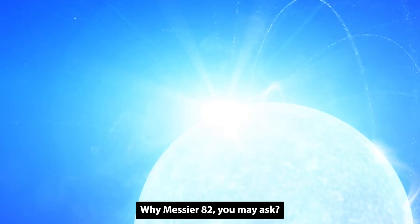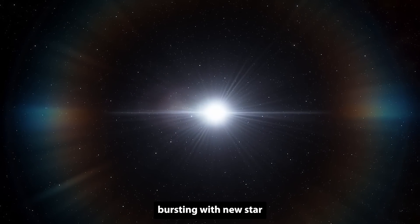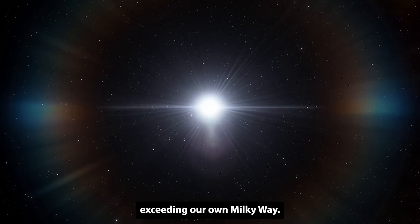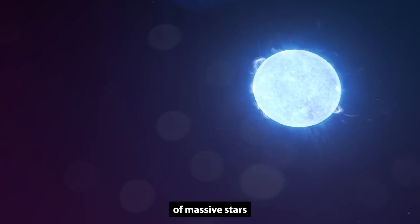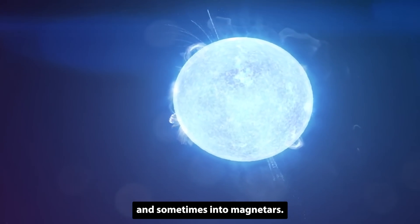Why Messier 82, you may ask? Well, it's known as a starburst galaxy, a galaxy bursting with new star formation at rates far exceeding our own Milky Way. This environment is ripe for the birth of massive stars that later collapse into neutron stars and sometimes into magnetars.